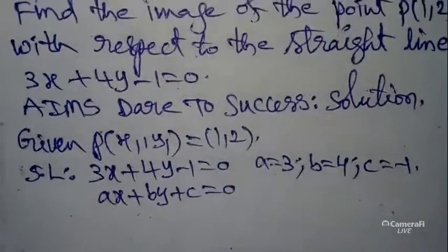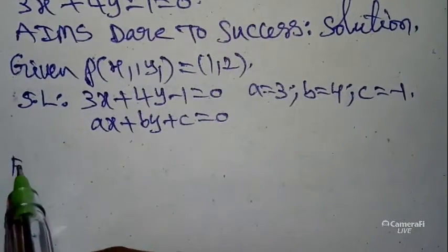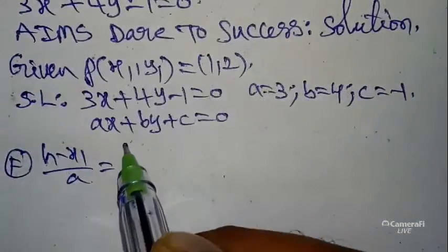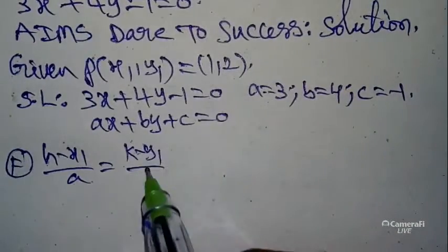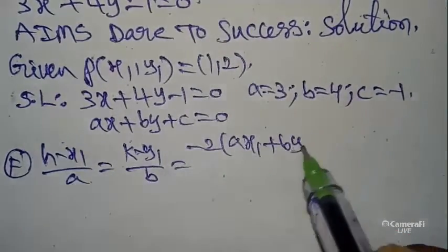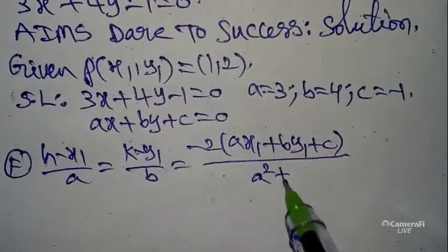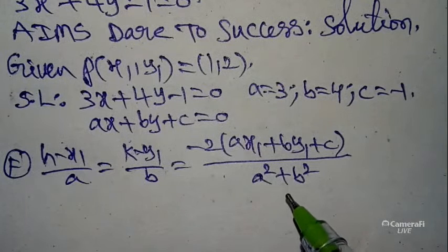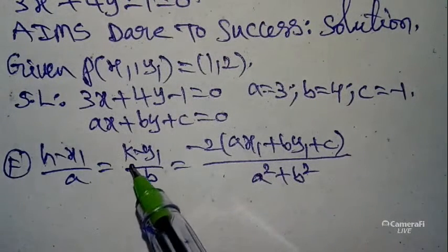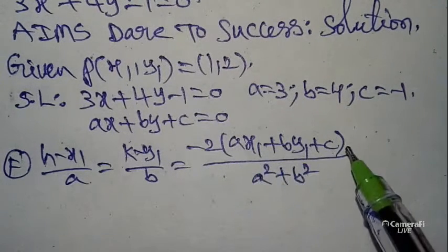So after getting these values we can find the image. My dear students, the image formula is: (h - x1)/a = (k - y1)/b = -2(ax1 + by1 + c)/(a² + b²). One more time I will tell you the image formula: (h - x1)/a = (k - y1)/b = -2(ax1 + by1 + c)/(a² + b²).